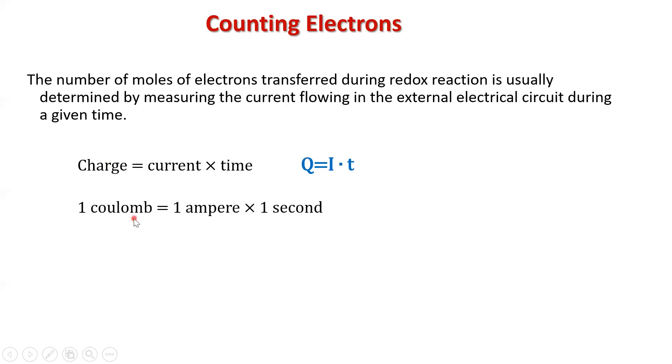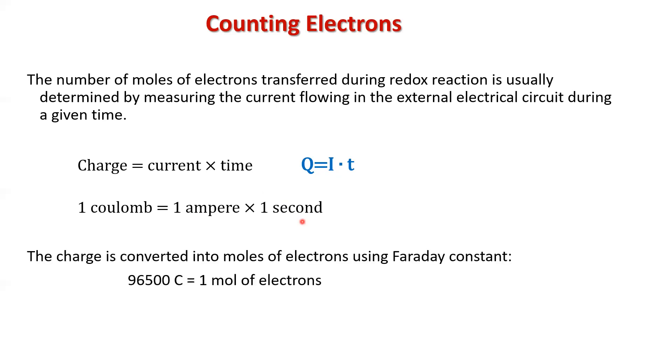When we talk about a Coulomb, a Coulomb is defined as one amp times one second. And charge is converted to moles of electrons with Faraday's constant. So this was written before as 9.65 times 10 to the fourth. This time it's just written out as 96,500 Coulombs. It can be written either way. Equals one mole of electrons.